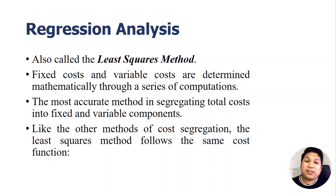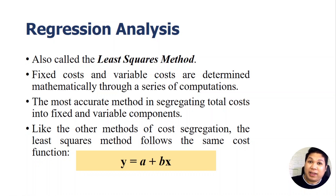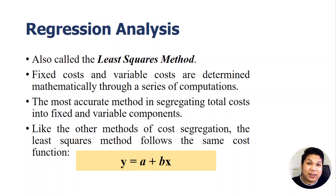Like other methods of cost segregation, the least squares method follows the same linear equation function: y is equal to a plus bx. In our previous lecture, it was y equals mx plus b, where m is the slope, x is the level of production, and b is the y-intercept or fixed cost. In this analysis, we relabel the letters: y is total cost, a is the y-intercept or fixed cost, and b is the slope. It's the same equation, just with different letters.